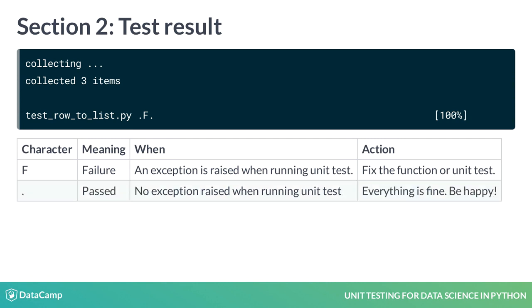Dot means that the unit test passed. This means no exceptions were raised by the assert statement or any other part of the unit test. For the test module TestRowToList.py, the first test passed, the second failed, and the third passed.